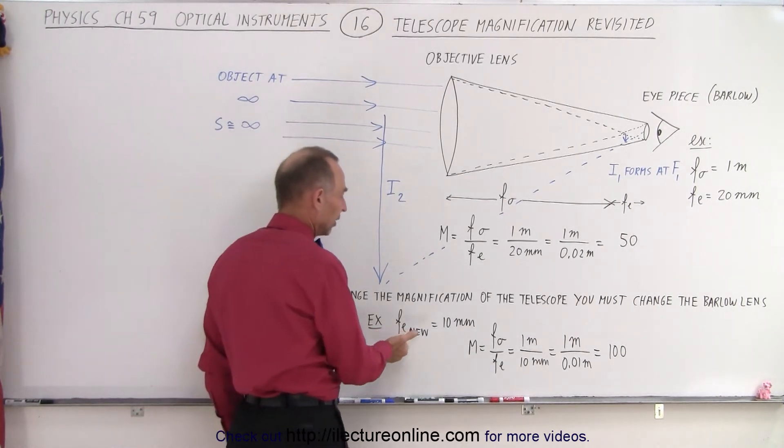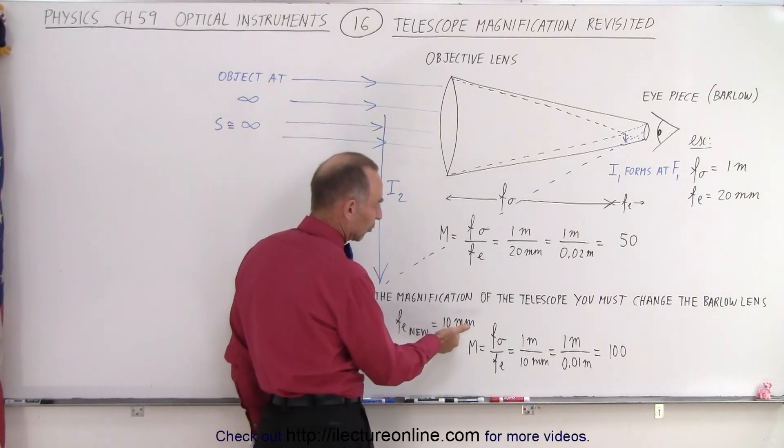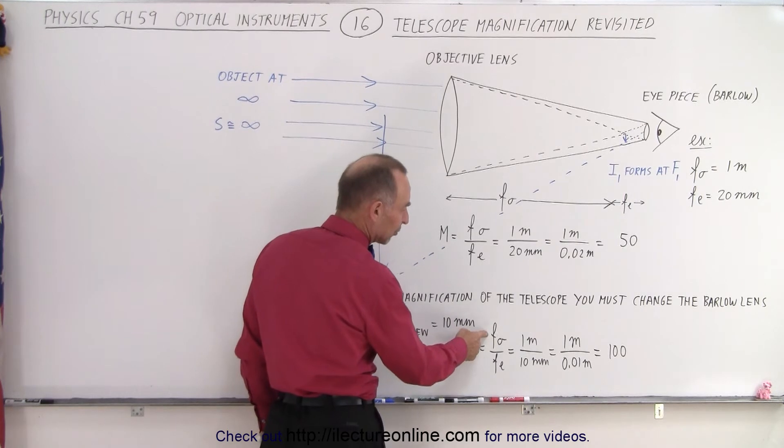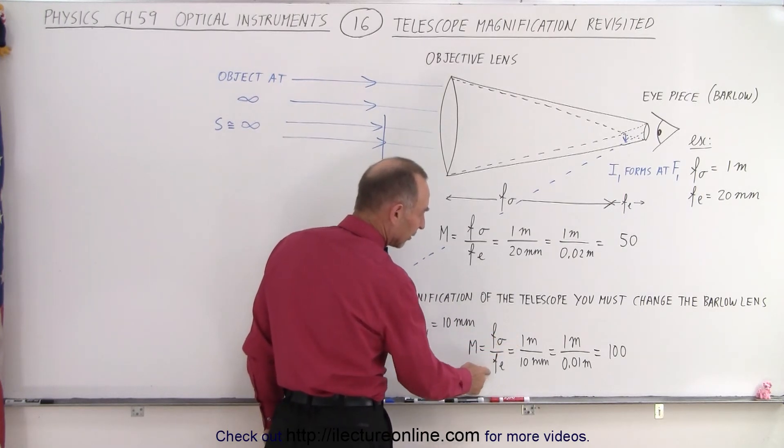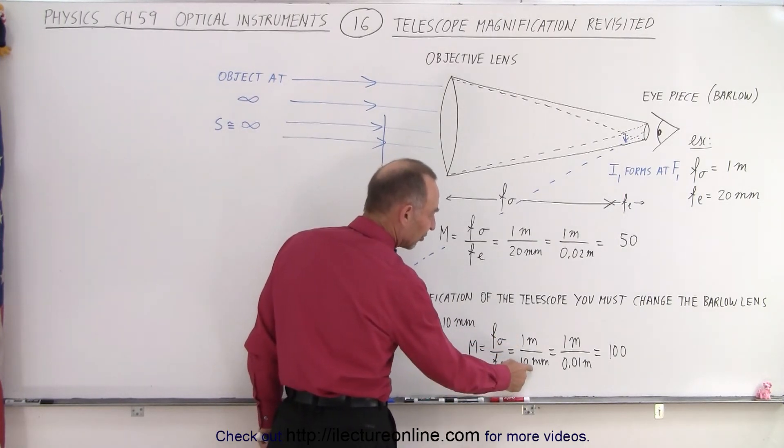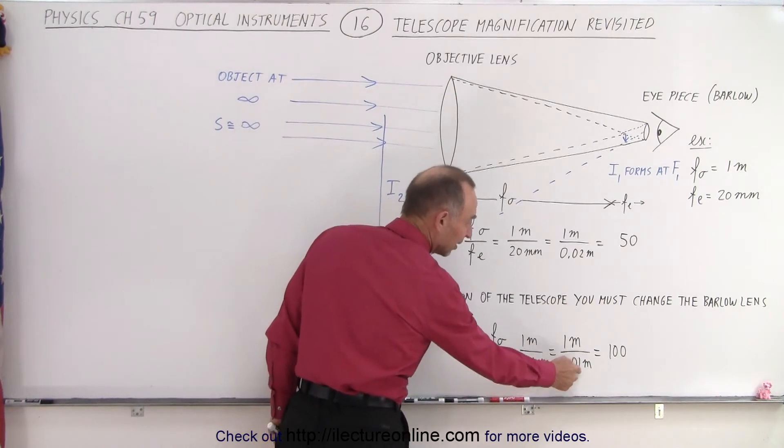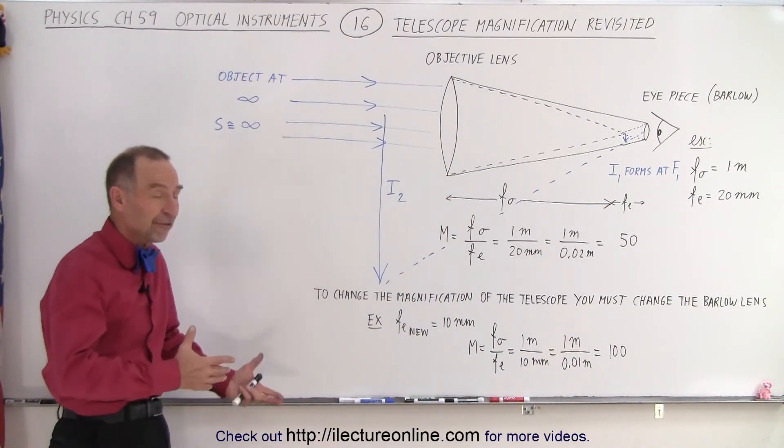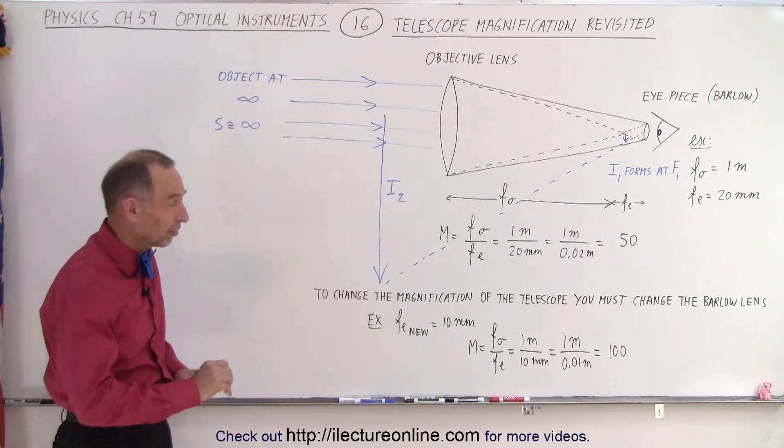So let's say that we change the Barlow lens and we go from a 20 millimeter lens to a 10 millimeter lens. So now you have the focal length of the objective, still one meter, now divided by the focal length of the eyepiece which is 10 millimeters which is 0.01 meter. And now you change the magnification of the telescope to 100 from 50. And that's how we do that. That's how we change the magnification of telescopes.